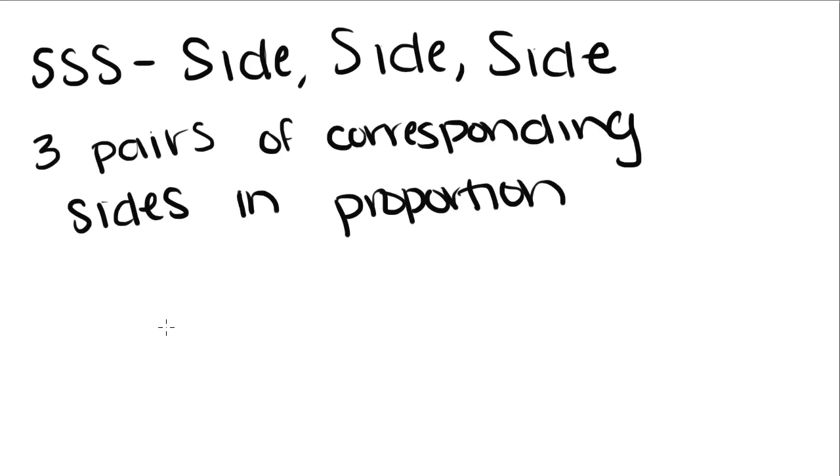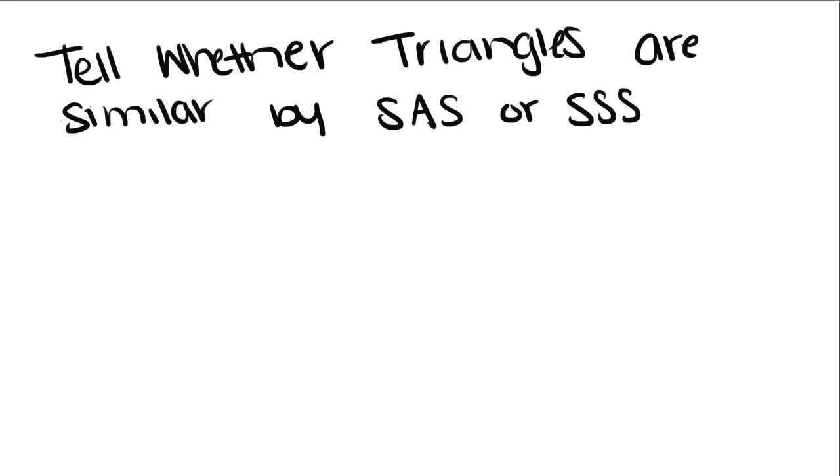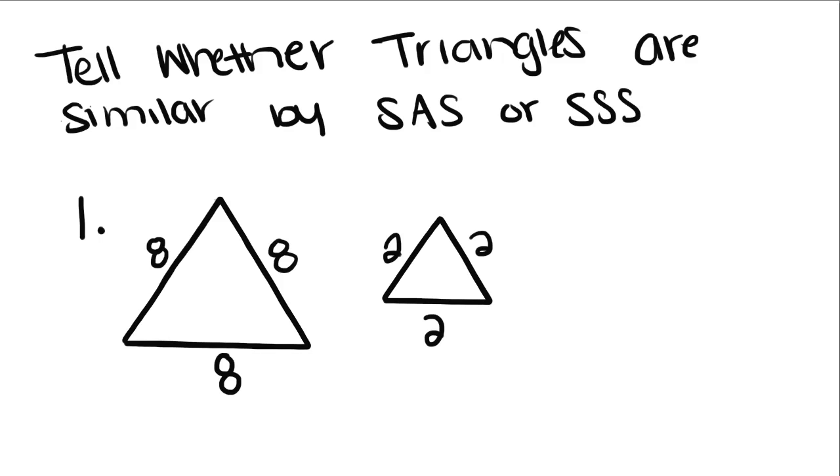And side-side-side is when you have three pairs of corresponding sides in proportion. So now we're going to do some examples with these two properties. Tell whether triangles are similar by side-angle-side or side-side-side.